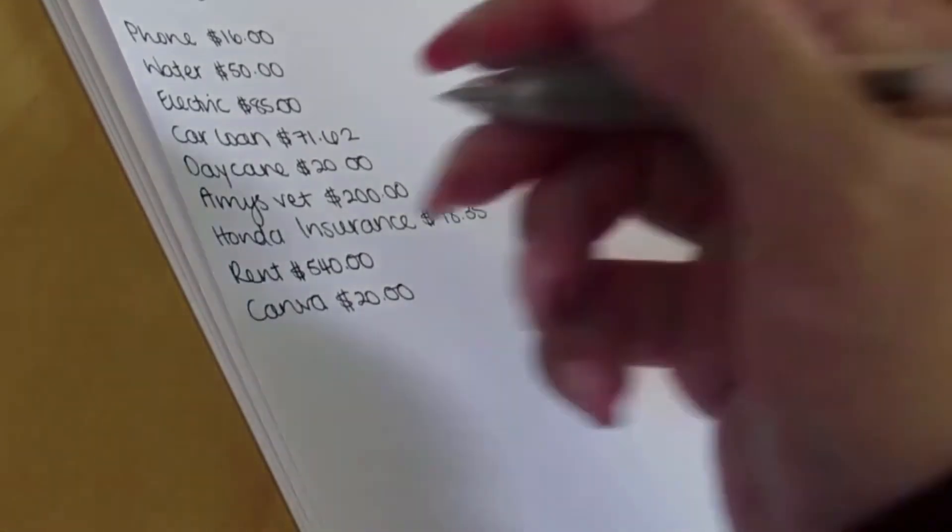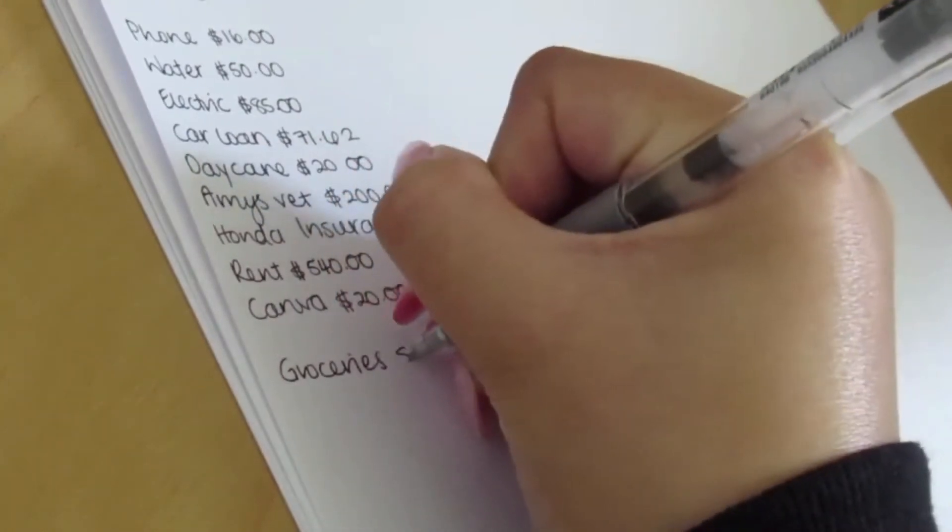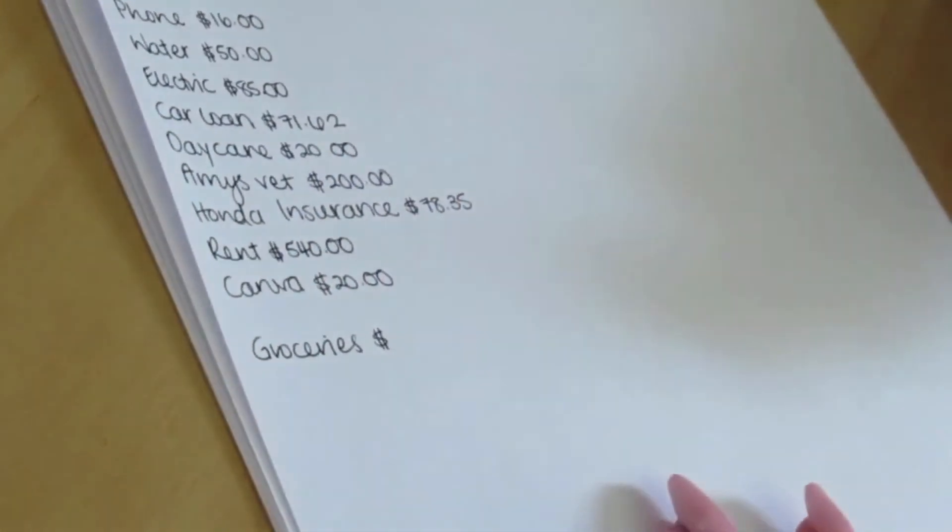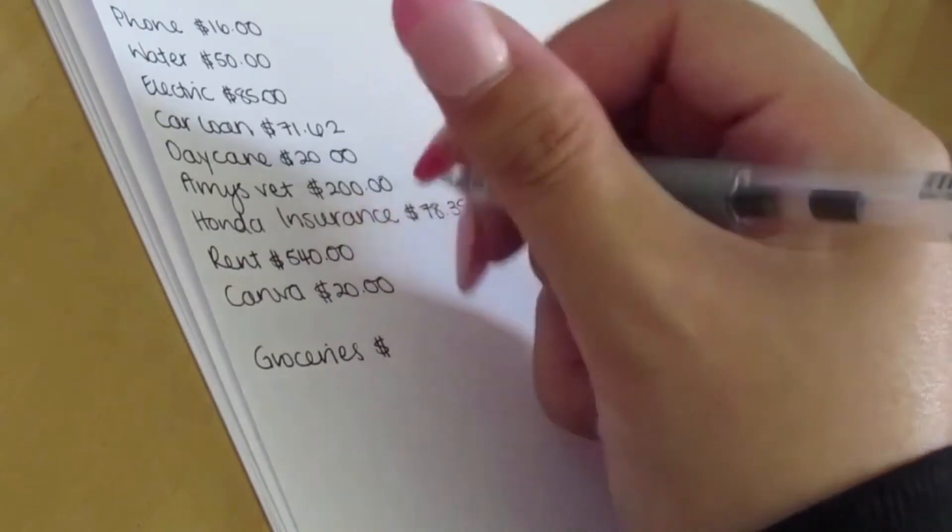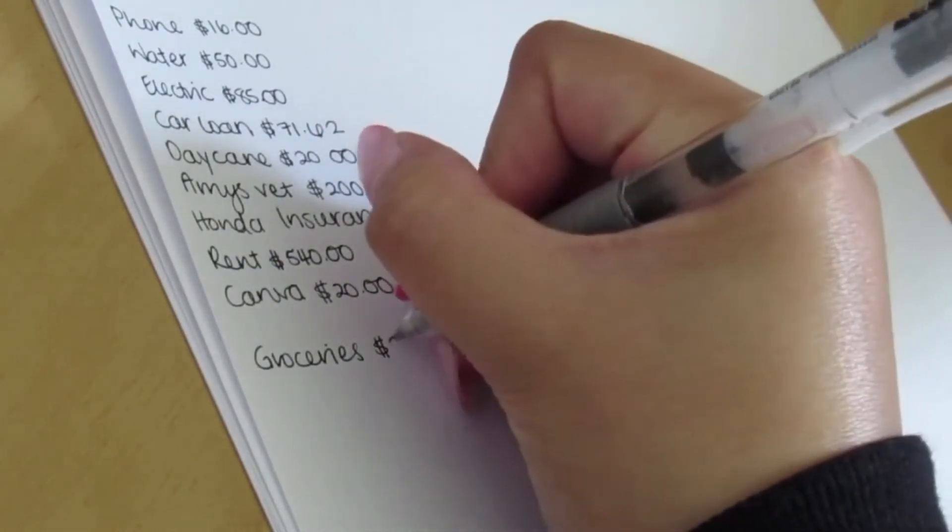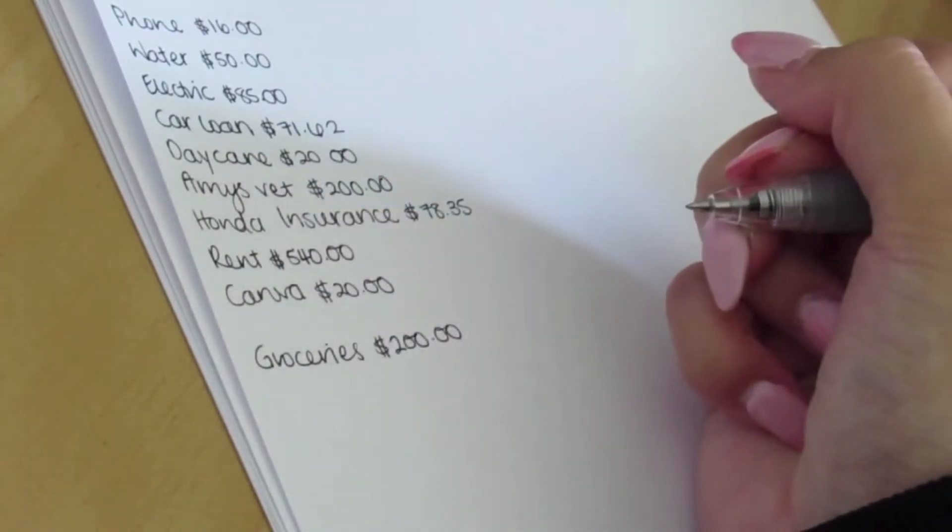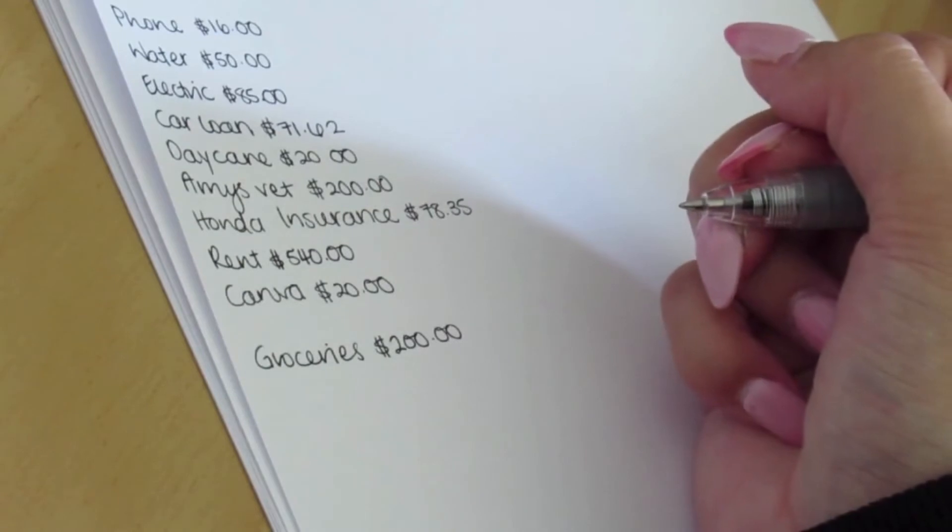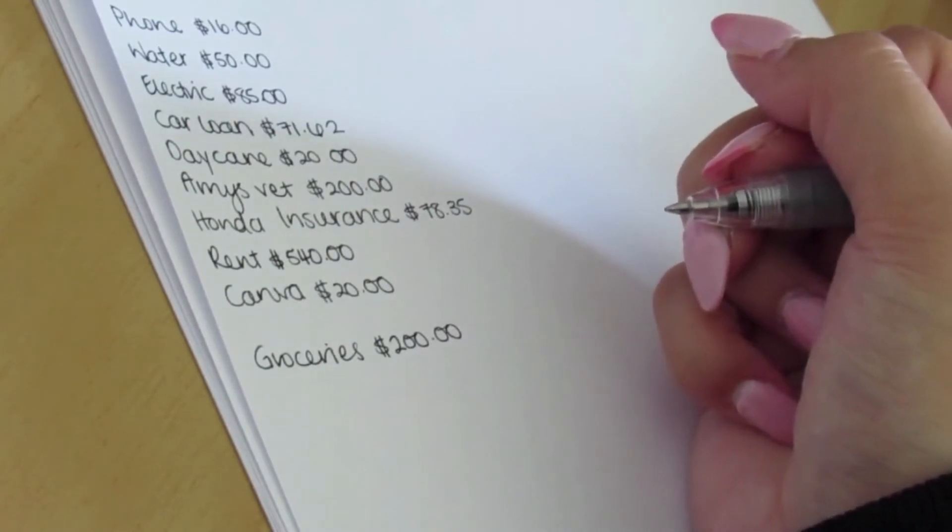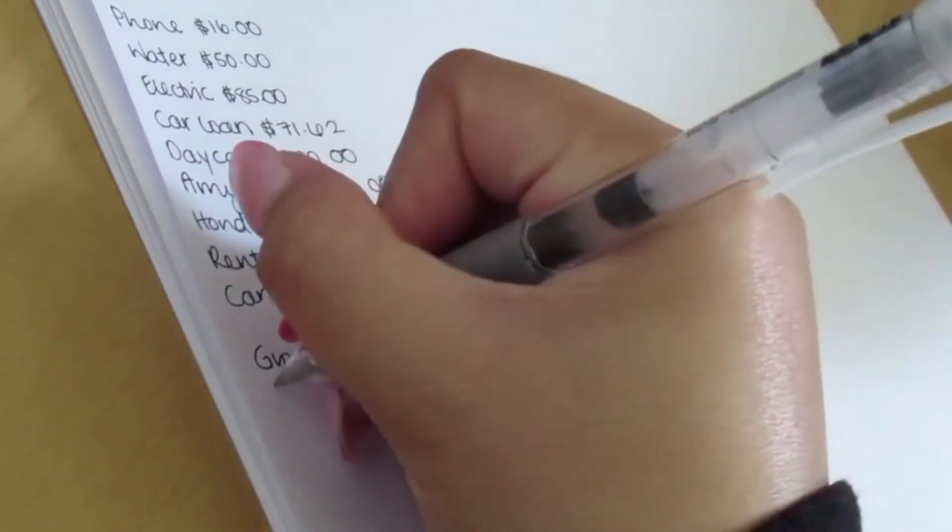Then we will have groceries. These are more of my cash envelope categories. Groceries, we'll say $200. I do have some things in the house already. We have a lot of pantry covered stuff, so we'll just need to stock up on the basics and some meats.